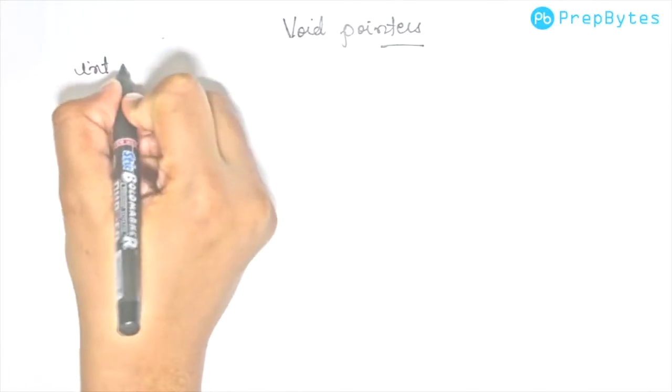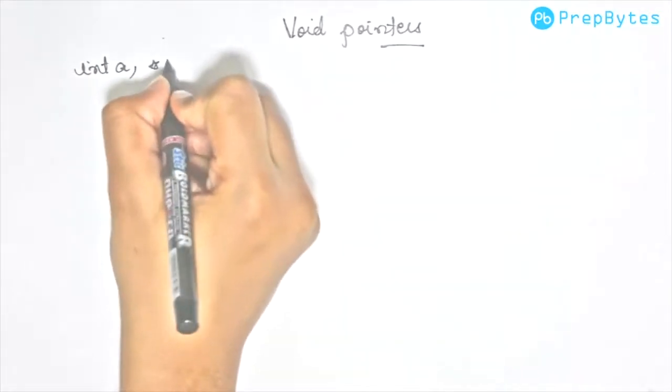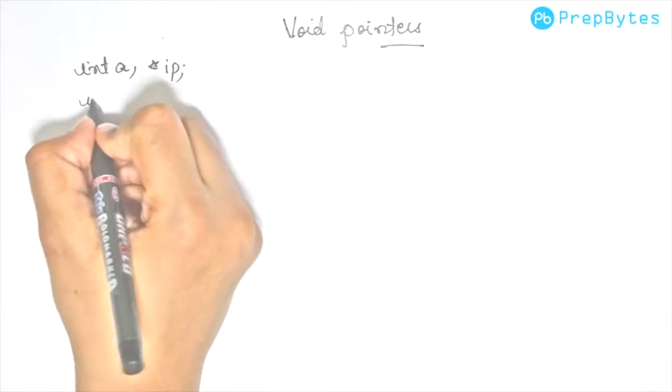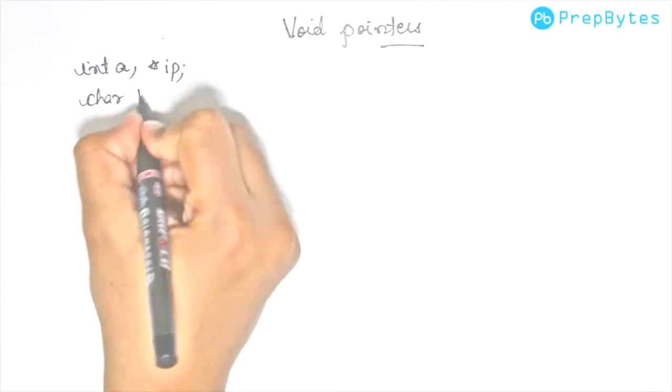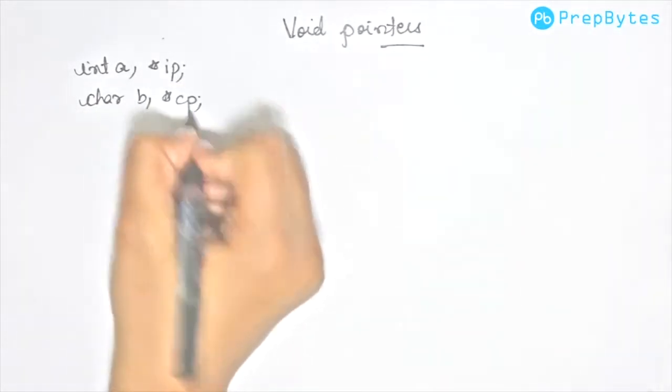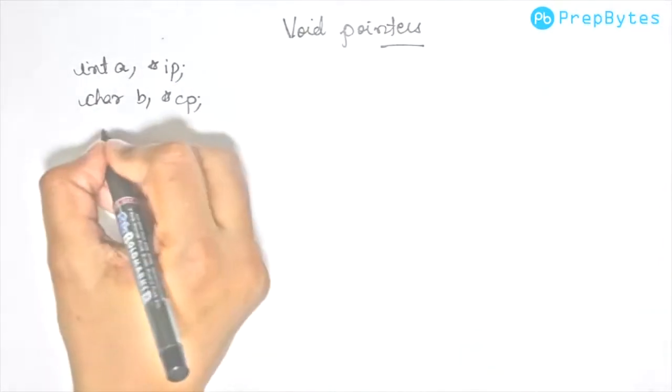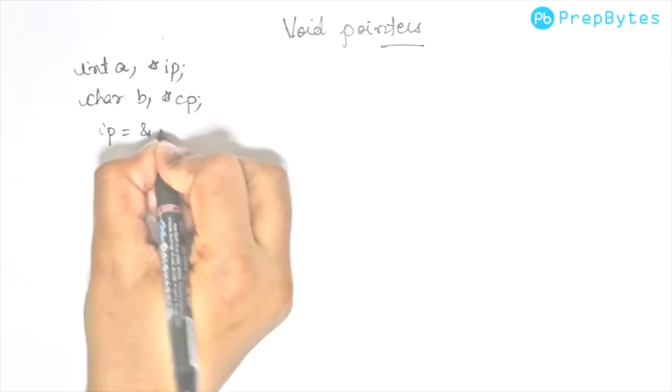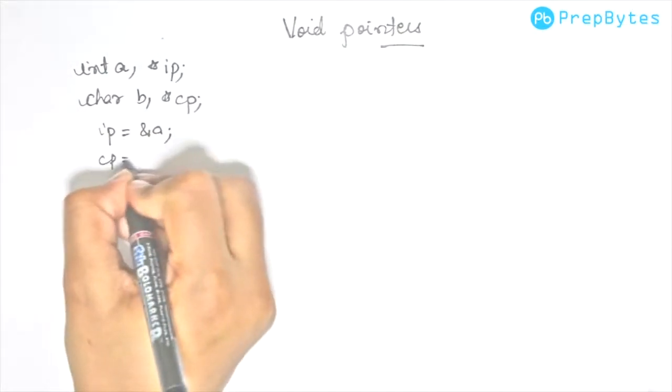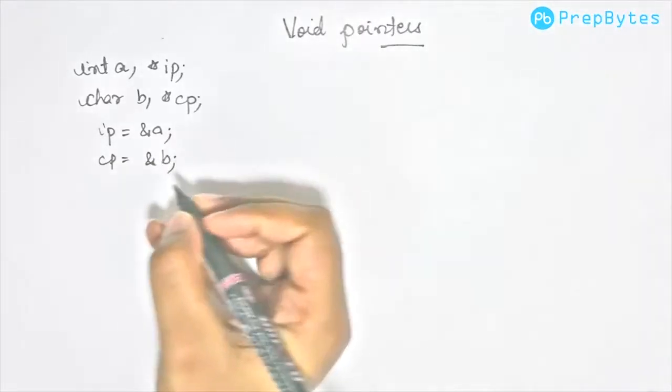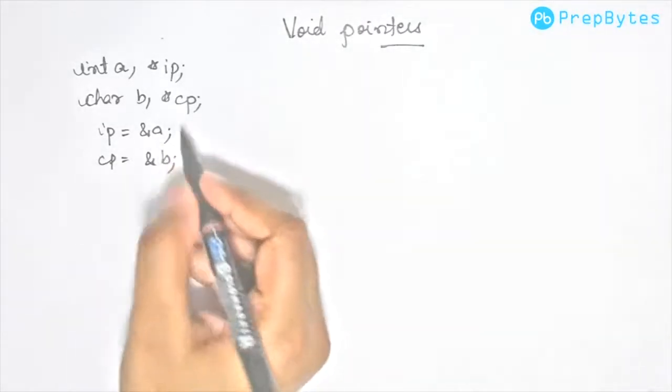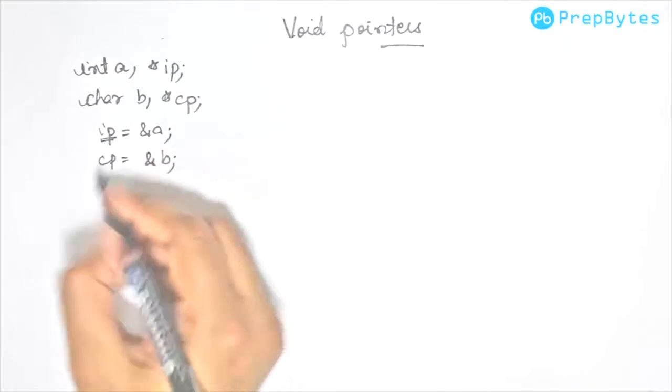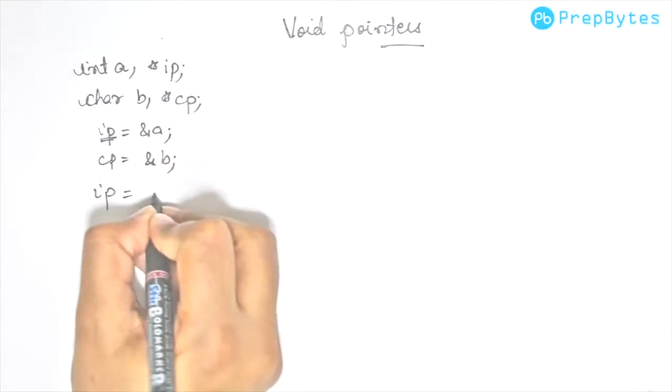Let's say we have int a, an integer pointer ip, char b, and a character pointer cp. ip stores the address of a and cp stores the address of b. If we try to store the address of b in ip, that gives an error. We can't do that.